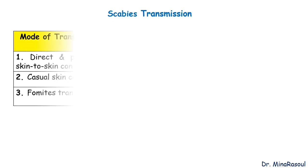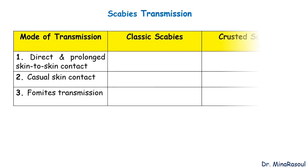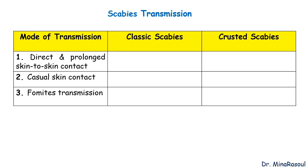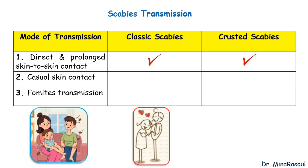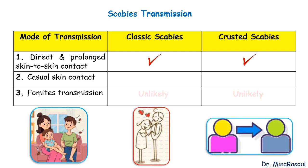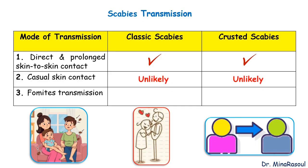Scabies transmission occurs through distinct modes depending on the type of the disease. Both classic and crusted scabies are transmitted by direct and prolonged skin-to-skin contact, as may occur among family members or sexual partners. Casual skin contact is unlikely to result in transmission. Fomite transmission — transmission of mites through contaminated objects like shared bedding, clothing, and towels — is more likely to occur in the setting of crusted scabies due to a much higher parasite burden.